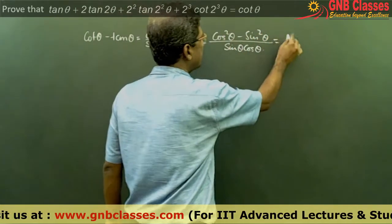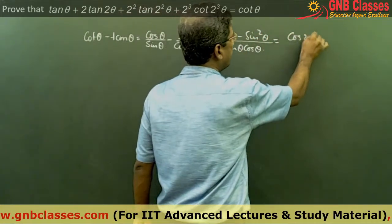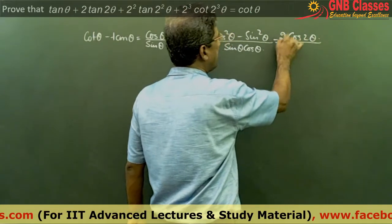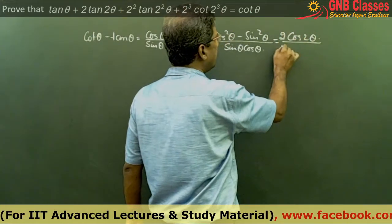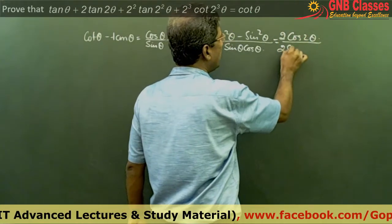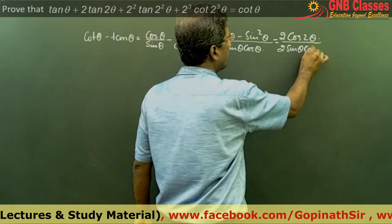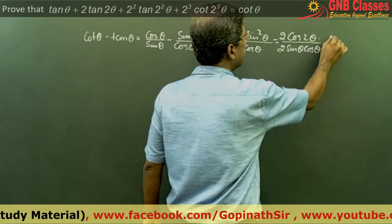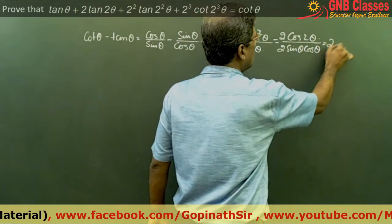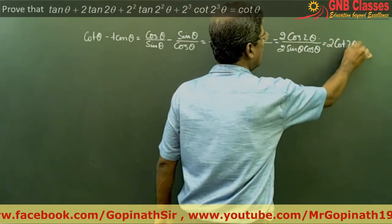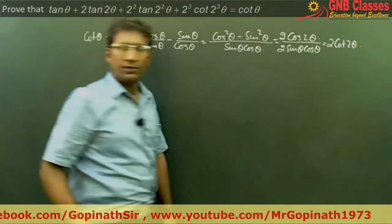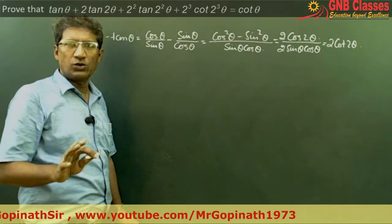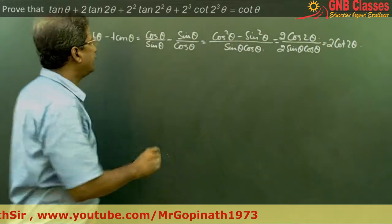This is nothing but cos 2θ. If we multiply 2 in the numerator and denominator, we are going to get 2 cot 2θ. So cot θ minus tan θ equals 2 cot 2θ.